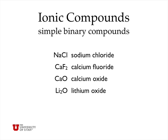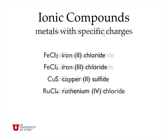In the case of lithium oxide, we need two positively charged lithium ions to balance the minus two charge of the oxide ion. Some metals can have variable numbers of charges or oxidation states. FeCl₂ is called iron(II) chloride, indicating you need two chloride ions to balance the plus two charge of iron. Iron(III) chloride needs three chloride ions to balance a plus three charge.